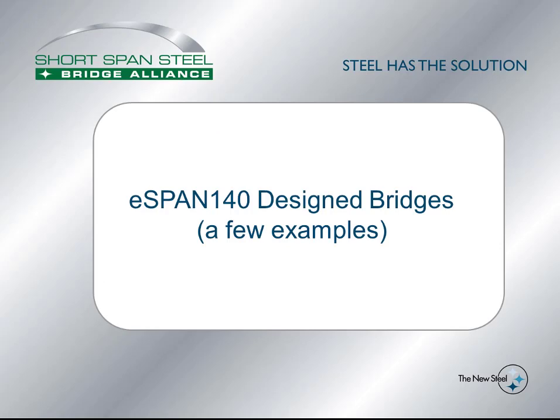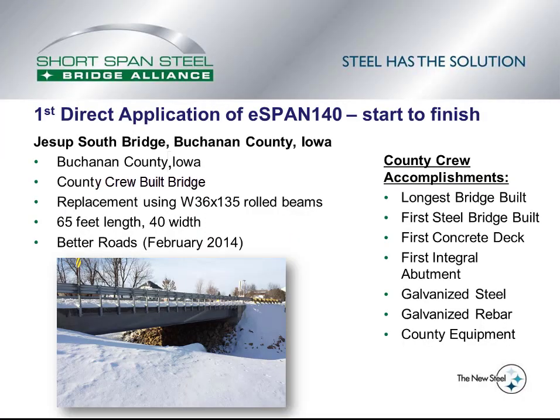We will now look at three eSpan 140 designed bridges. The first is actually the first direct application of eSpan 140 from start to finish. Jessup South Bridge in Buchanan County, Iowa was designed by eSpan 140 and built by a county crew using W36x135 rolled beams. The county crew had built several concrete bridges before but had never built a steel bridge or one of this size. It was the first concrete deck they had placed, the first integral abutment they had built, and they used galvanized steel and galvanized rebar, all built with county equipment.